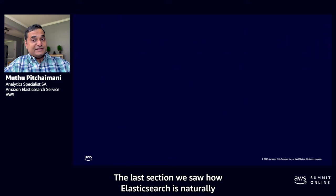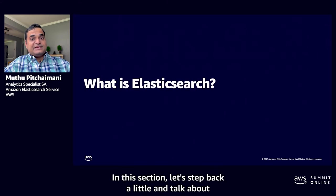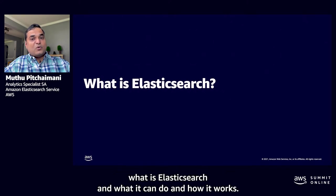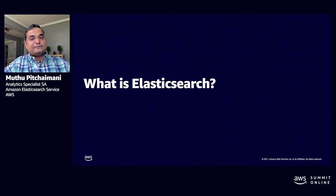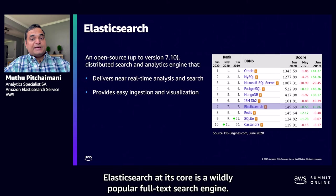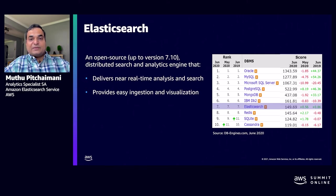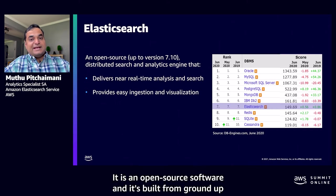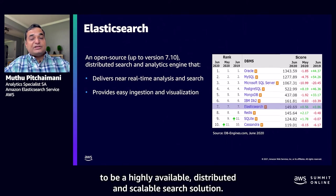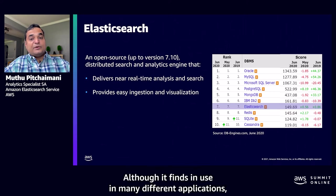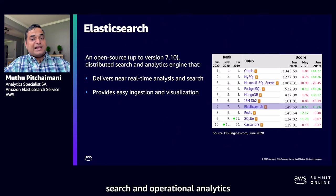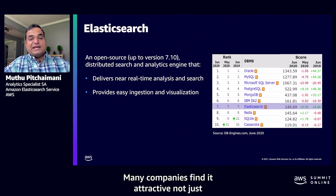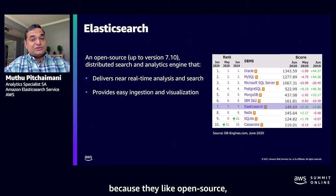In this section, let's step back and talk about what Elasticsearch is, what it can do, and how it works. At its core, Elasticsearch is a widely popular full-text search engine. While it is ranked in the top 10 database systems over the last many years, it is also a top-ranked search engine. It is open source software built from the ground up to be highly available, distributed, and scalable. Search and operational analytics are by far its most popular use cases, and companies realize value from it very quickly.